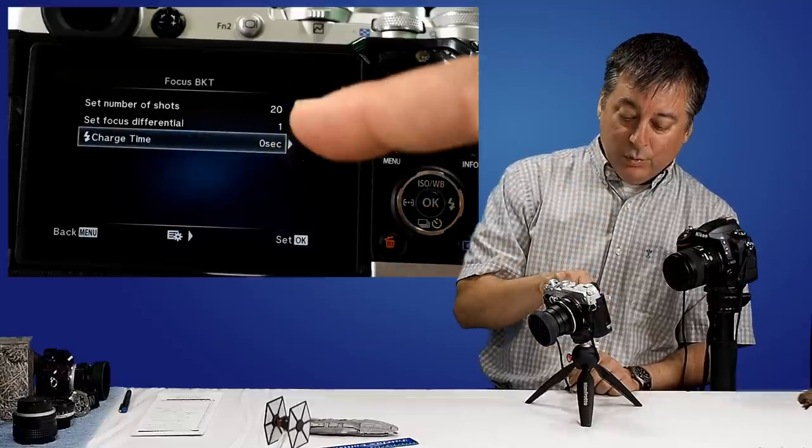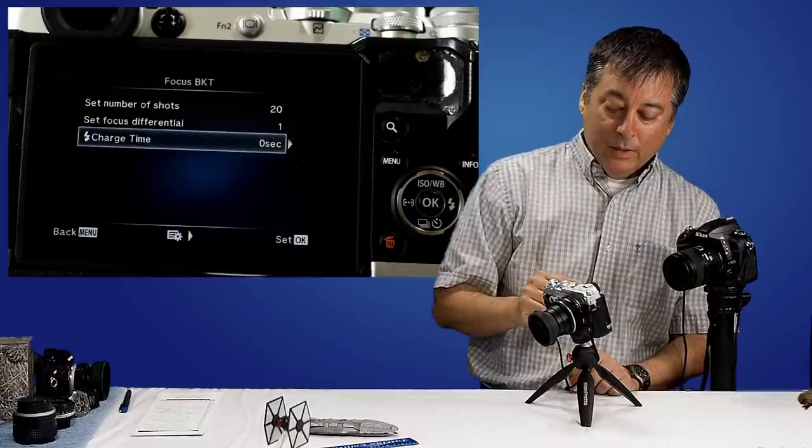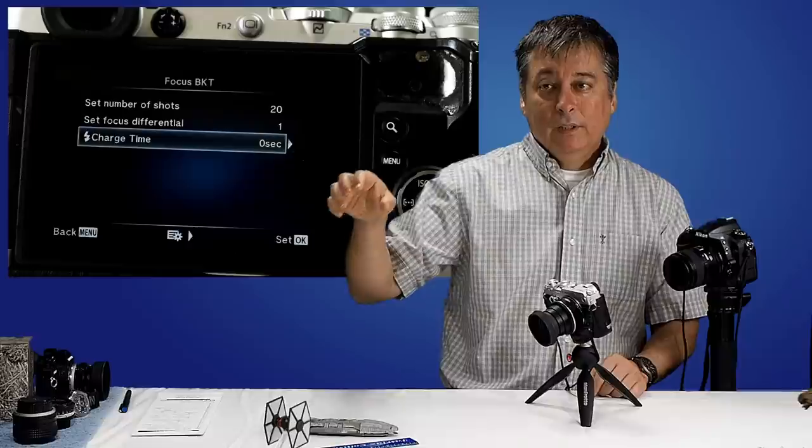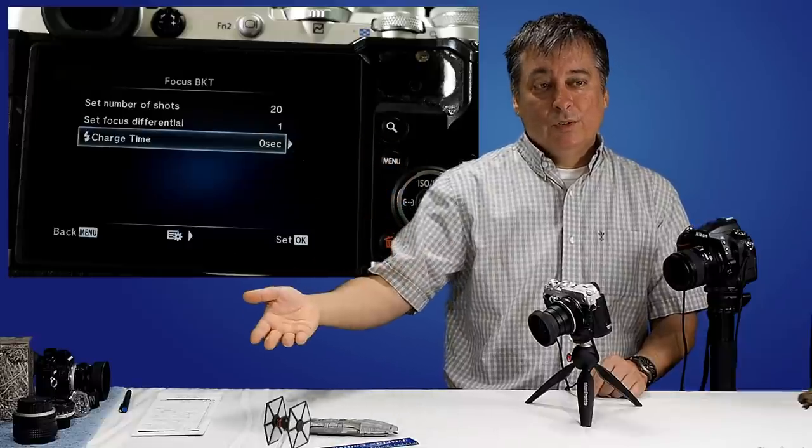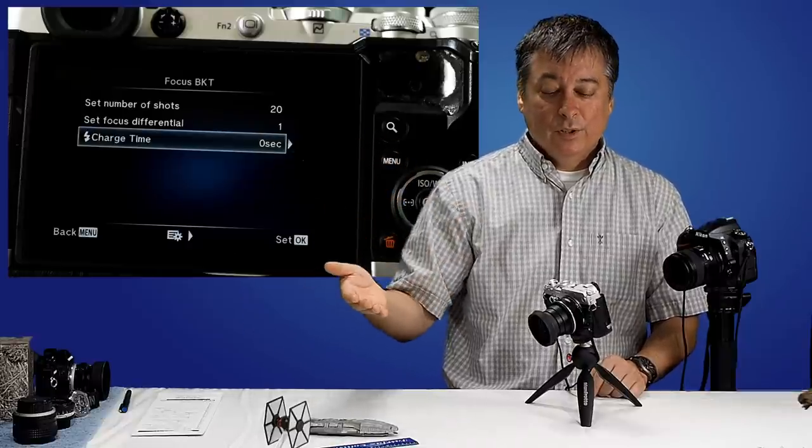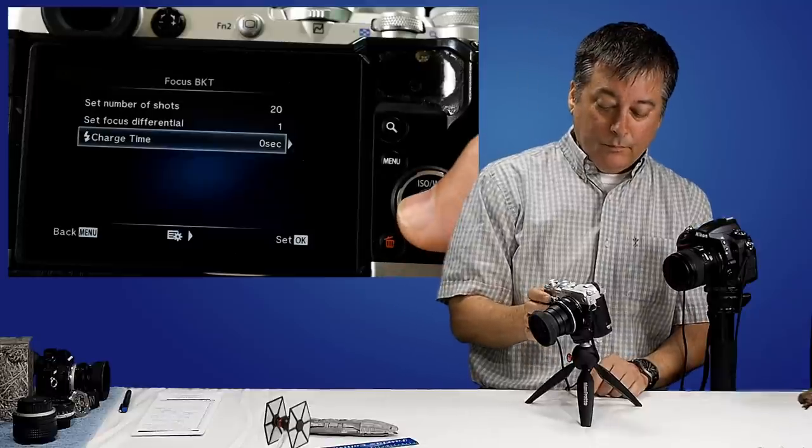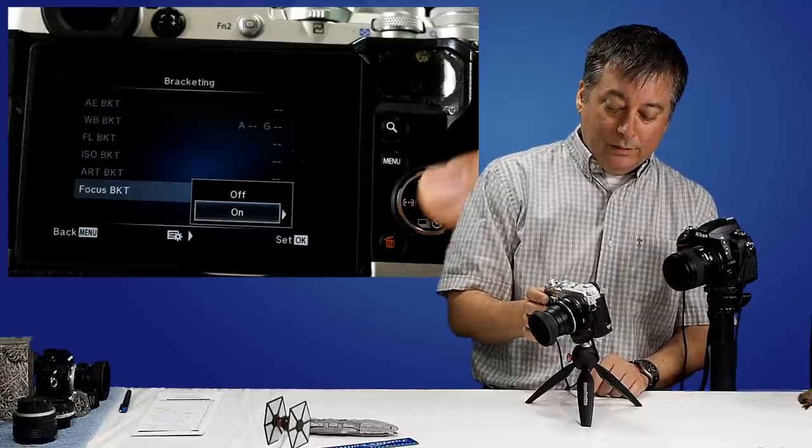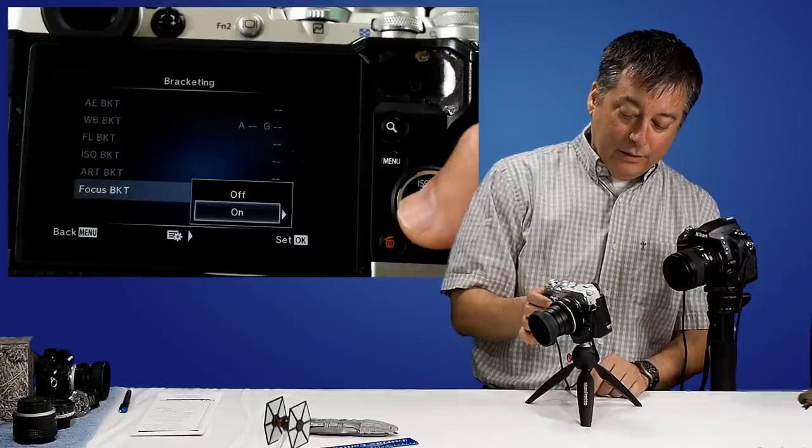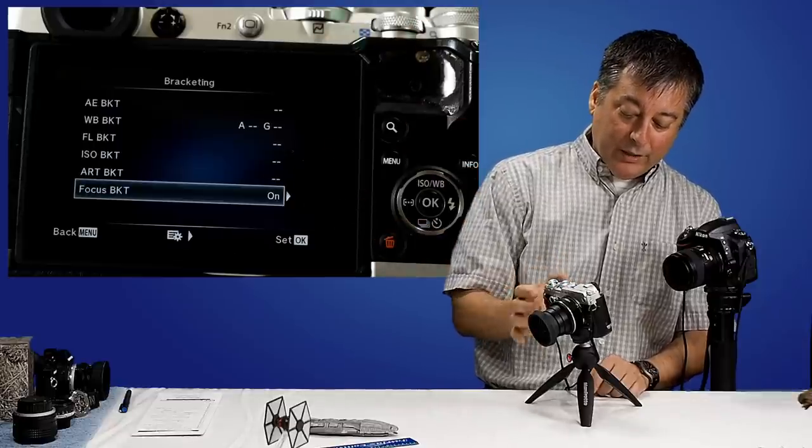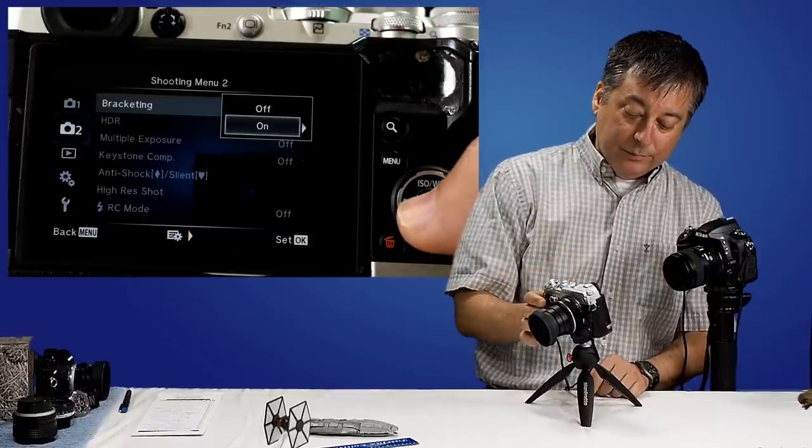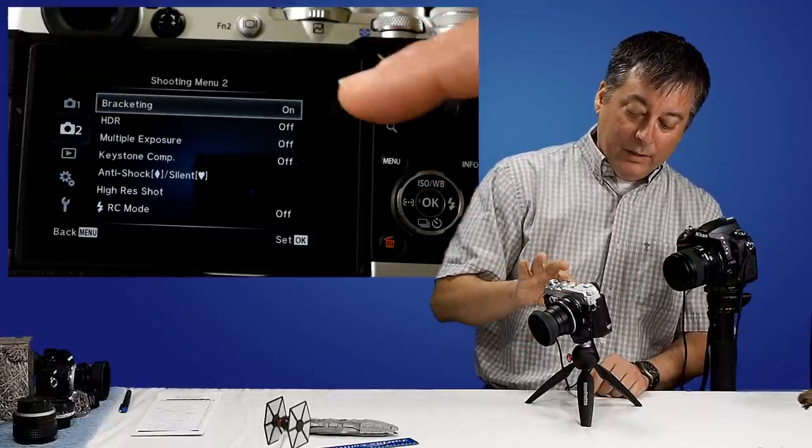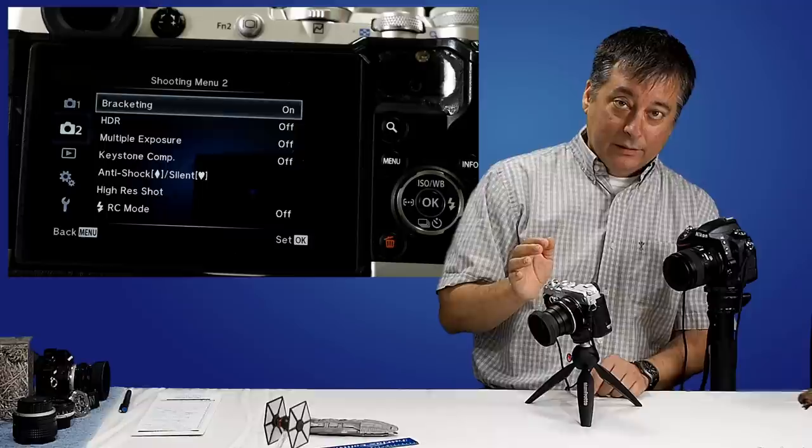There's also an option here for charge time. So if you're using a flash, you can tell it to wait before taking the next picture so that the flash has time to charge up. So I'll click okay. I'll click okay again. Now focus bracketing is on. I'll click okay again. Now bracketing in general is on. And I'll click okay again. And now it says here bracketing is on.